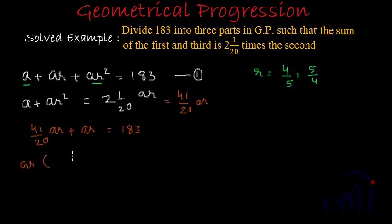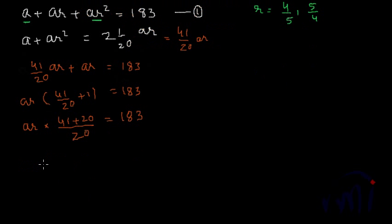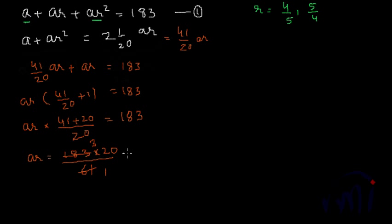Taking ar common: ar(41/20 + 1) = 183, which gives ar × (61/20) = 183. So ar = 183 × 20 ÷ 61. Since 61 × 3 = 183, this simplifies to ar = 60. So the value of a is 60 divided by r, and we have two values of r.